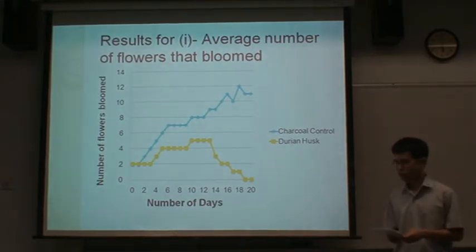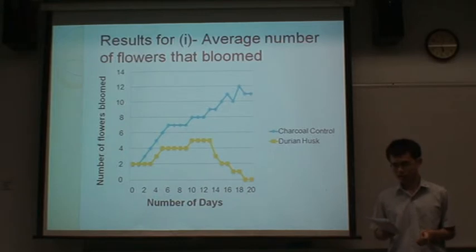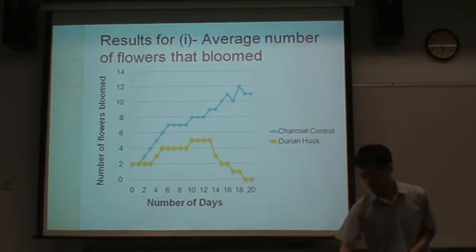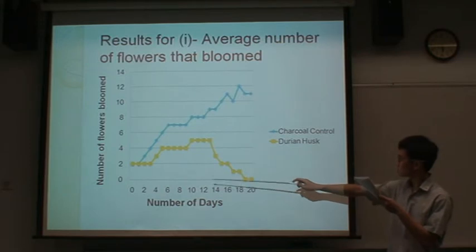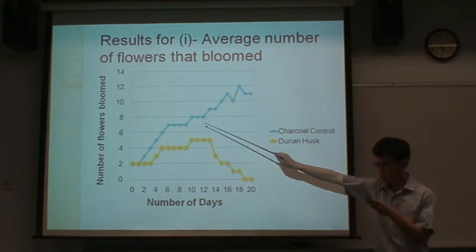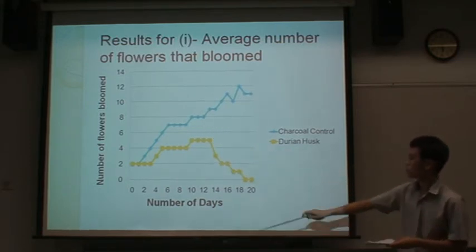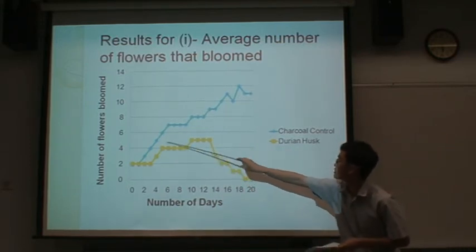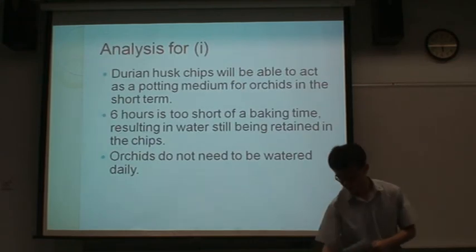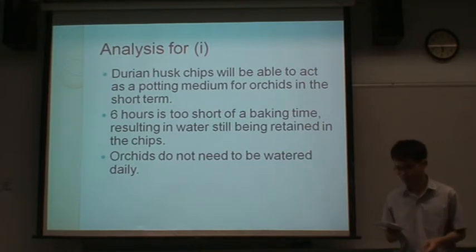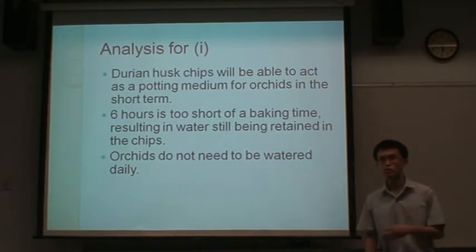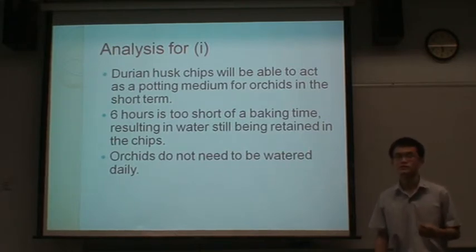This is the result showing the average number of flowers that bloomed for both the charcoal control and the Durian Husk sample. From here, we can see the number of flowers from the Durian Husk sample shows an increasing trend, while the charcoal follows a decreasing trend. We conclude that the Durian Husk chips are able to act as a growing medium for orchids in the short run, but the experiment needs to continue to investigate effectiveness in the long run.